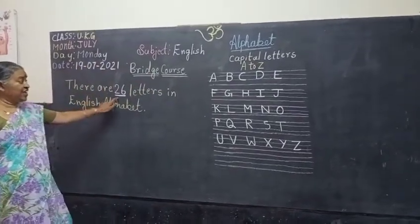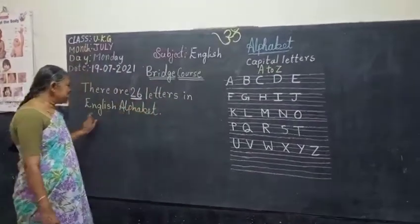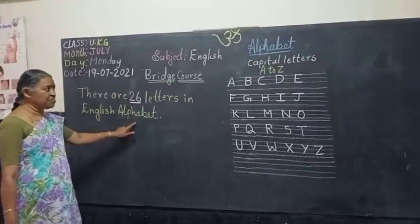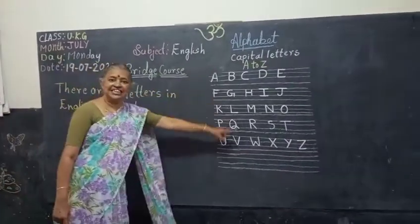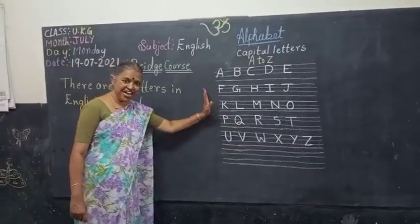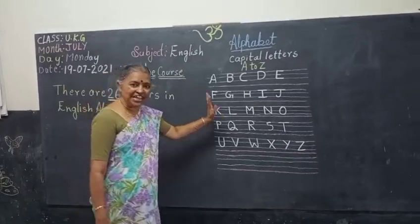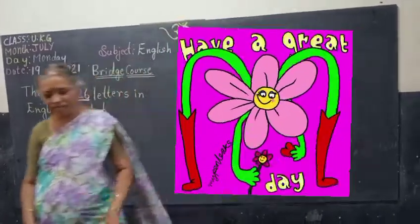You have to write in your homework books one time. Understand? Also write: there are 26 letters in the English alphabet. Write this, children. Ok, have a nice day. Bye bye!